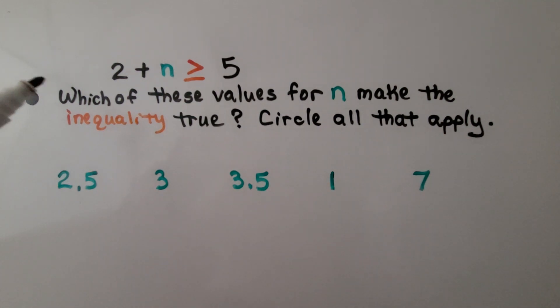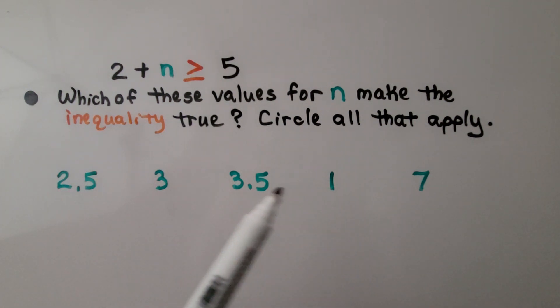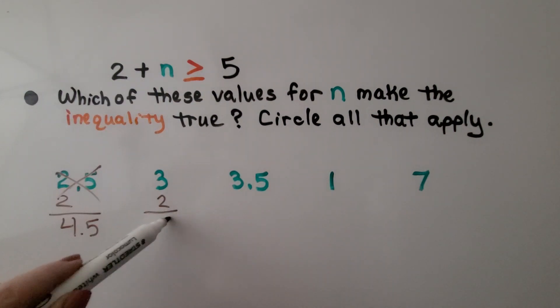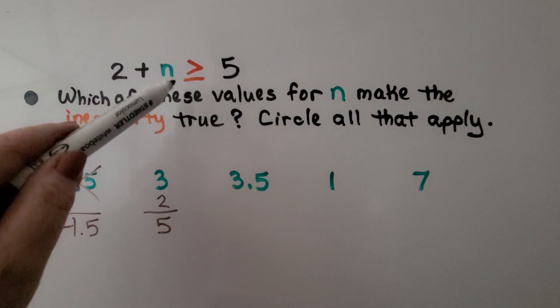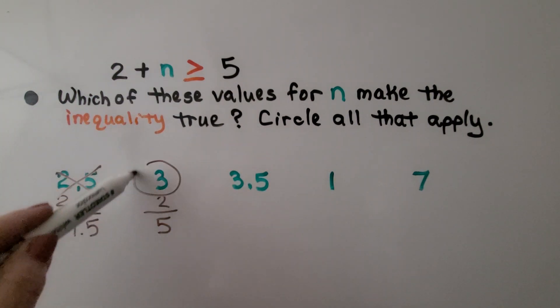We have the inequality two plus n is greater than or equal to five. Which of these values for n make this inequality true? And we need to circle all that apply. If n was two and five tenths, we'd have two and five tenths plus two. That would give us four and five tenths. Well, that's not greater than five. So it's not this one. If we had three, we'd have two plus three. That is equal to five. And it says greater than or equal to. So this could be a solution. That would make it true.